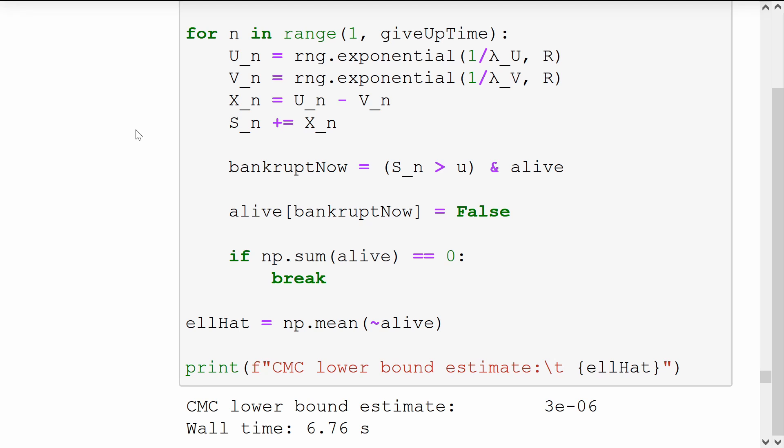Next we update the alive vector to reflect those newly bankrupted insurers are no longer alive. And if there are none left, then we can stop simulating new claims and return our answer.